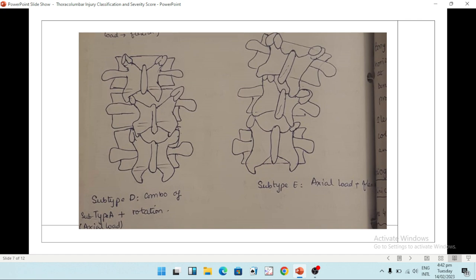Then there are subtypes D and E. In type D, there is some element of rotation. For example, if this was the alignment of the spine, one of them has rotated to the side. And then there is type E where some element of scoliosis is there. This is called flexion. So these were all burst fractures.